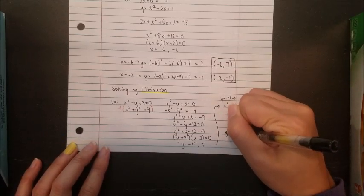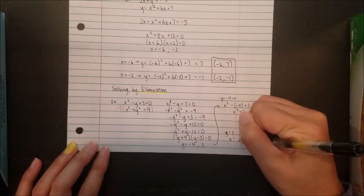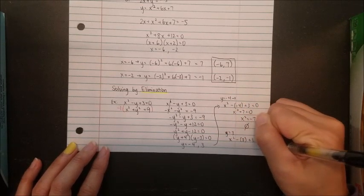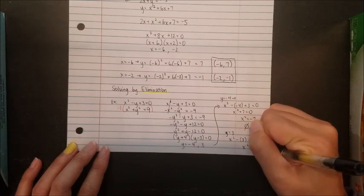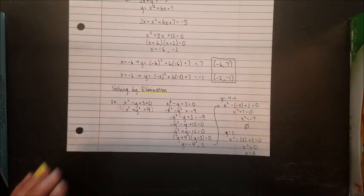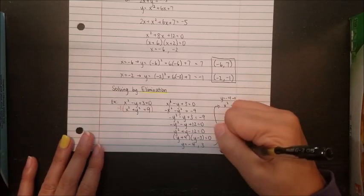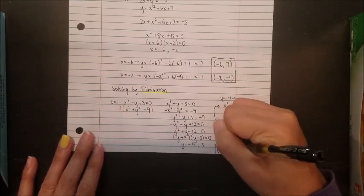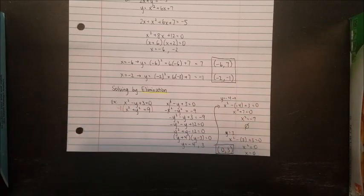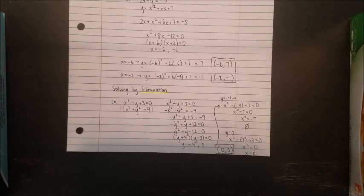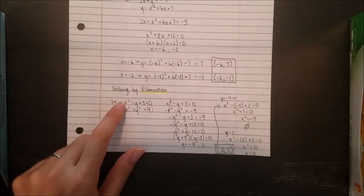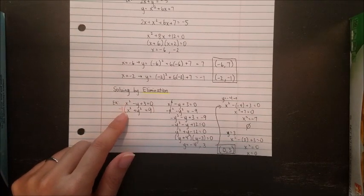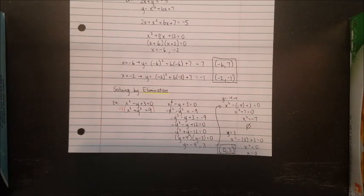Now plugging y equals 3 into the equation: x squared minus 3 plus 3 equals 0, giving x squared equals 0, so x equals 0. There's only one solution here — the final answer is (0, 3). Make sure to write coordinates in the right order: x first, then y. So for this problem, the parabola and circle meet at only one point, (0, 3).